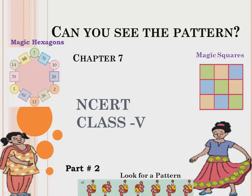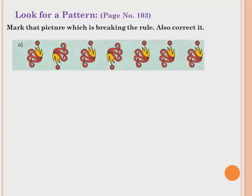Welcome to NCERT Class, Chapter 7: Can You See the Pattern, Part 2. Look for a pattern on page number 103. Mark the picture which is breaking the rule and also correct it. Now, in this given pattern, we have to find out which image is breaking the rule, tick that, and correct it.